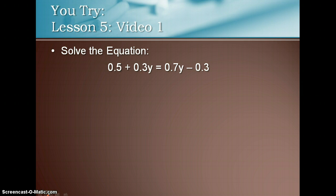This is the U-try. 0.5 plus 0.3y equals 0.7y minus 0.3. If you cannot solve it, please continue to watch the rest of the video. If you do understand it, go ahead and move on.